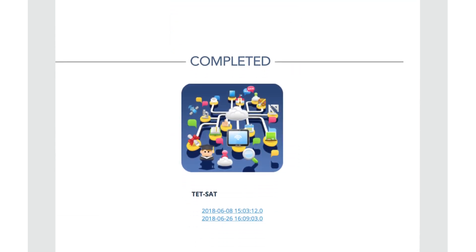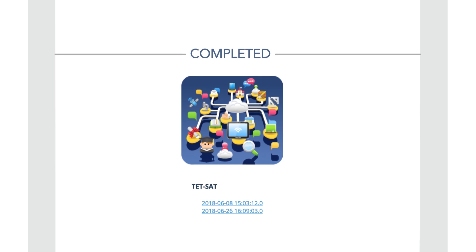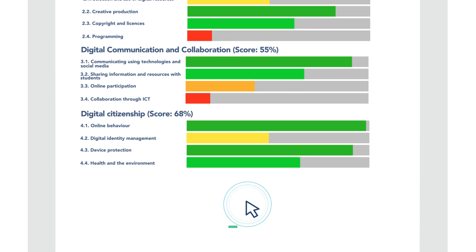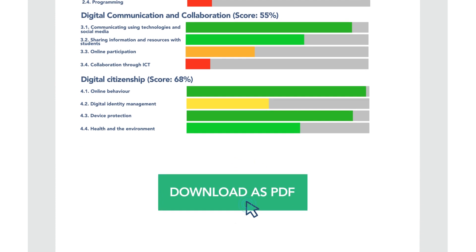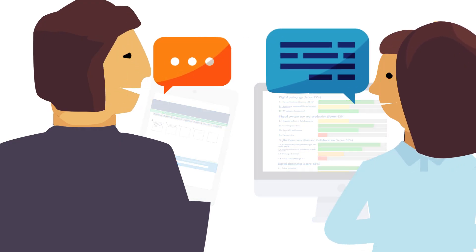The Mentep platform saves your results for you. You can access every feedback you received under the section Completed on the Mentep platform. You can also export your feedback page as a PDF — just click on the Download as PDF button at the bottom of the feedback page. This could be useful if you wanted to discuss your current use of ICT with a colleague, for example.